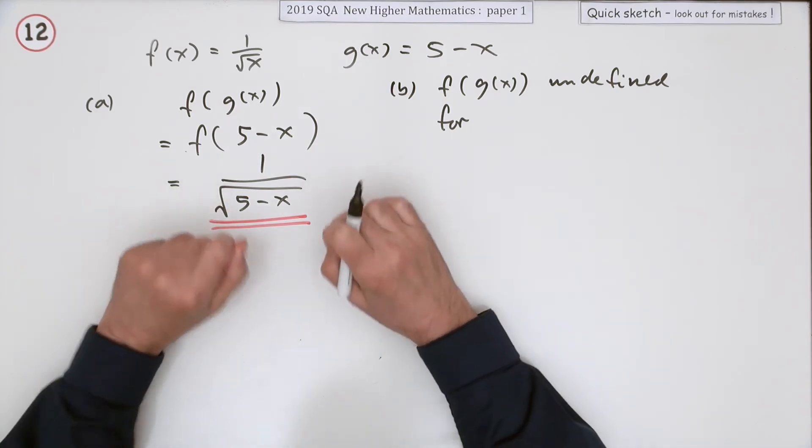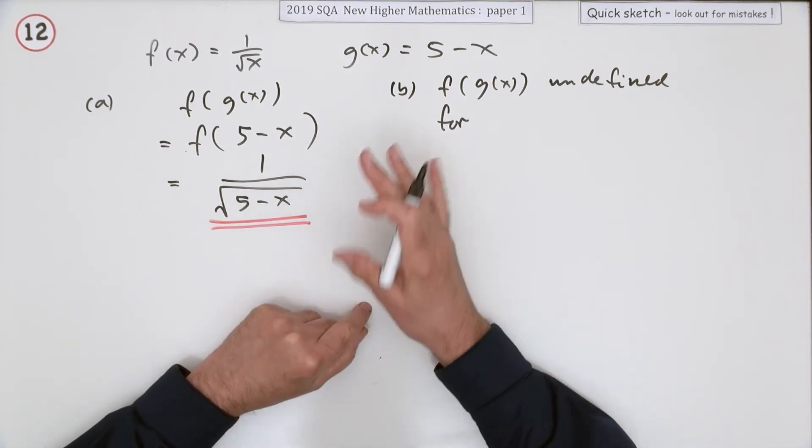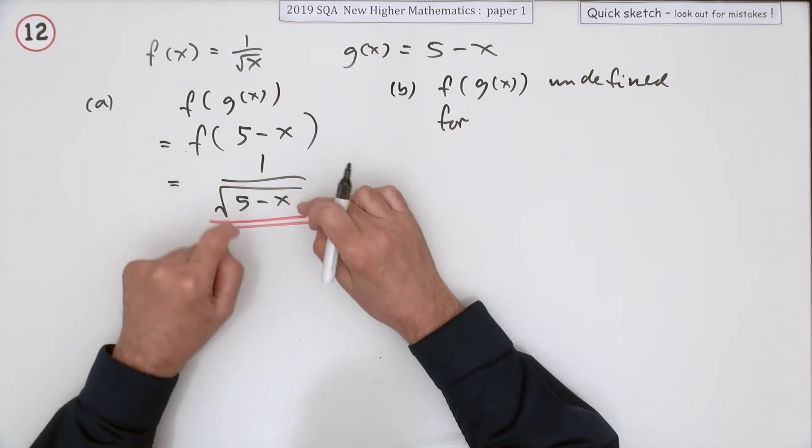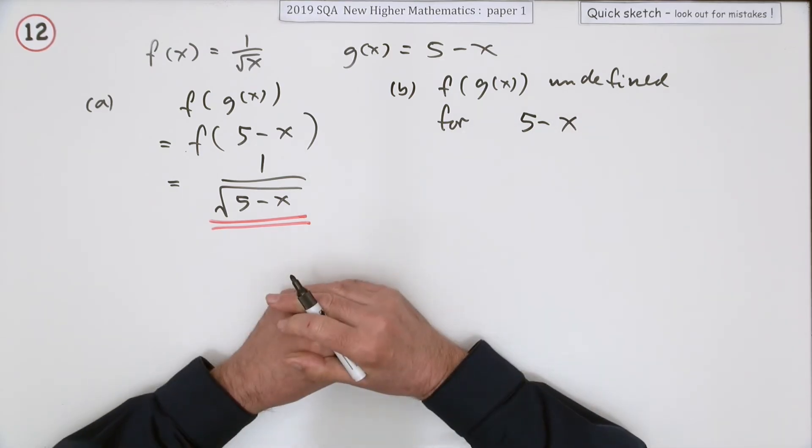You have to think when would you not be able to do that calculation. What are the forbidden calculations? The forbidden ones are you can't divide by 0. So I don't want this denominator to equal 0. So 5 minus x mustn't equal 0.